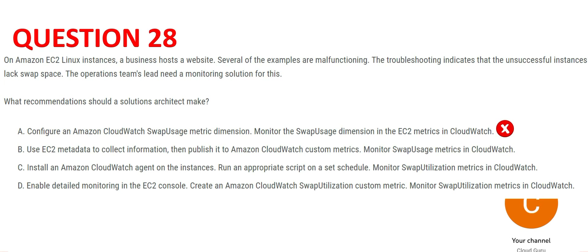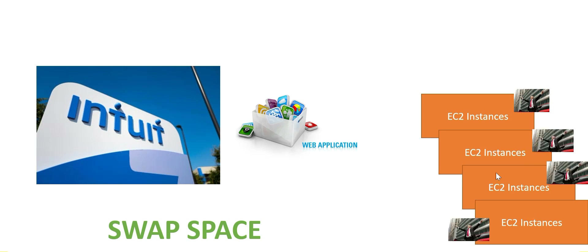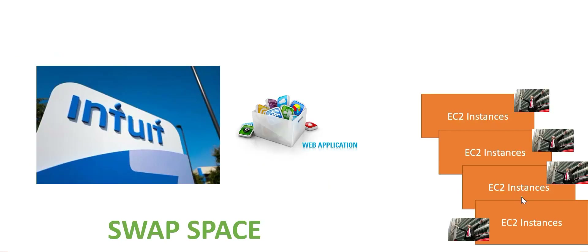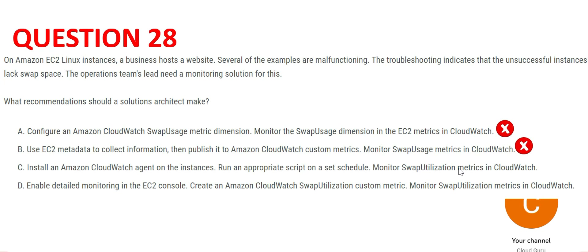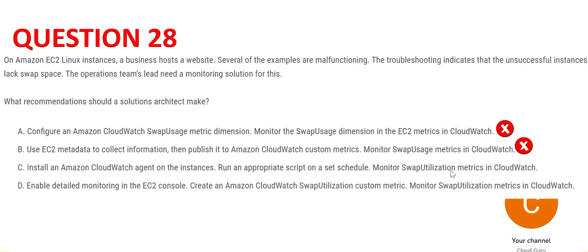Option C says to install the CloudWatch agent on all instances. We will install agents on each instance, and those agents on a particular schedule will send data to CloudWatch. Since swap utilization is not a standard metric in CloudWatch, we create a custom metric called swap utilization and the agents will constantly send data to CloudWatch. We can then monitor this custom swap utilization metric. So C is correct.